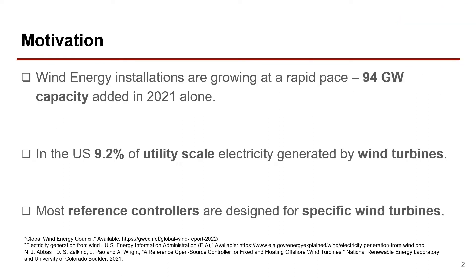Wind energy installations are growing at a rapid pace. Nearly 94 gigawatts of capacity was added in 2021, bringing the global cumulative wind power capacity to 837 gigawatts. In the US, about 9.2% of utility scale electricity was generated by wind turbines in 2021. According to literature, most reference controllers are designed for a specific wind turbine, and they are a challenge to modify and use for other wind turbine types. Having a generic controller that is open source and easy to understand could help those inexperienced in control engineering to optimize controller performance and improve wind turbine performance.